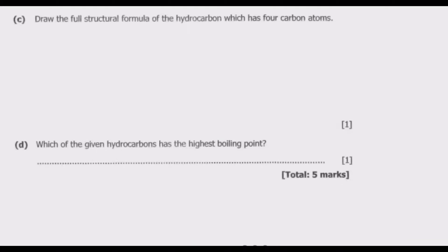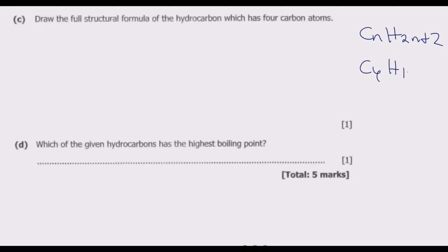Question C asks us to draw the full structural formula of the hydrocarbon which has 4 carbon atoms. Using the generic alkane formula with C equal to 4, we get C4H10. We know these are alkanes, and they do not have double carbon bonds because they are saturated.